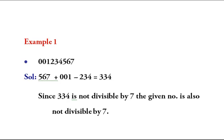In this case we are having the number 1234567. As explained, we have to make sets of three starting from the units place. The first set is 567, the next set is 234, and the remaining digit is 1, so we put two zeros to make it a set of three: 001.